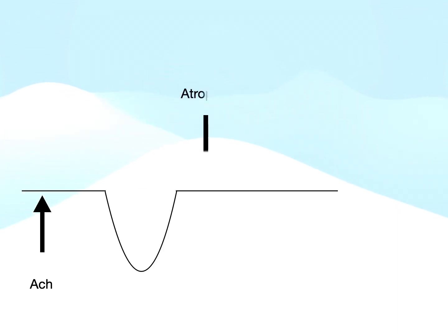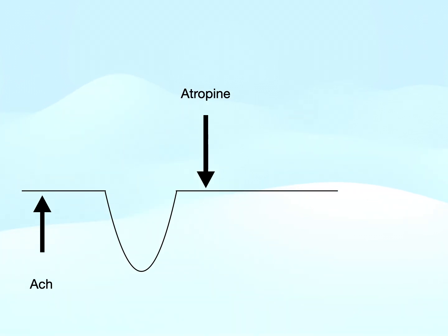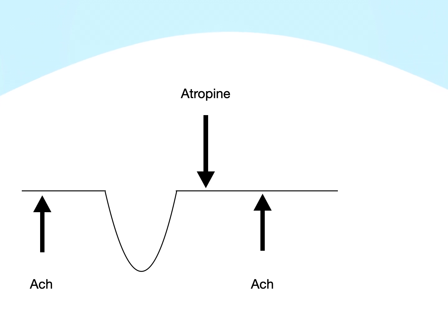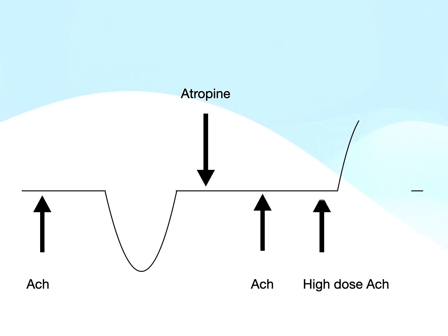When we administer atropine, which is the muscarinic receptor blocker, it doesn't affect the blood pressure. But after administration of atropine, when we repeat the same dose of acetylcholine, there will be no change in blood pressure — because of the blockade of muscarinic M2 receptors that were responsible earlier for the fall in blood pressure.